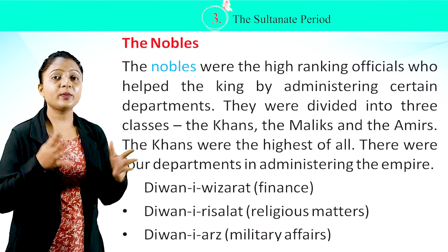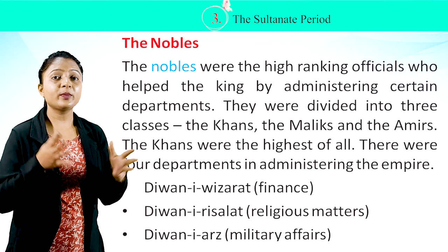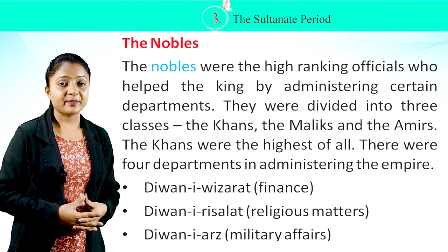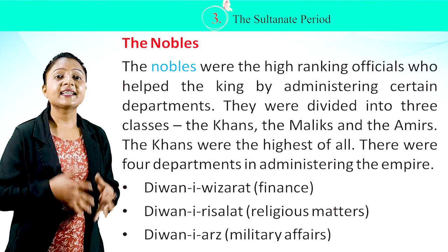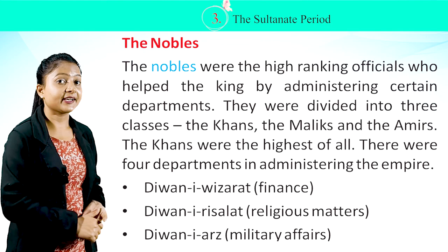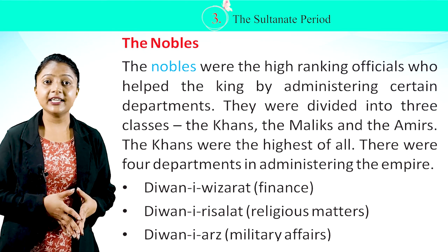The nobles were high-ranking officials who helped the king by administering certain departments. They were divided into three classes: the Khans, the Maliks, and the Amirs, with the Khans being the highest. There were four departments in administering the empire: Diwan-e-Vizarat (Finance), Diwan-e-Risalat (Religious Matters), Diwan-e-Arz (Military Affairs), and Diwan-e-Insha (Royal Correspondence).